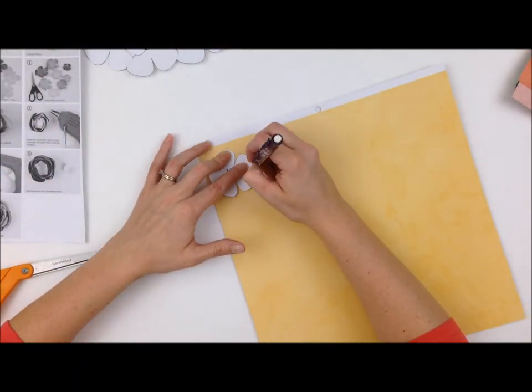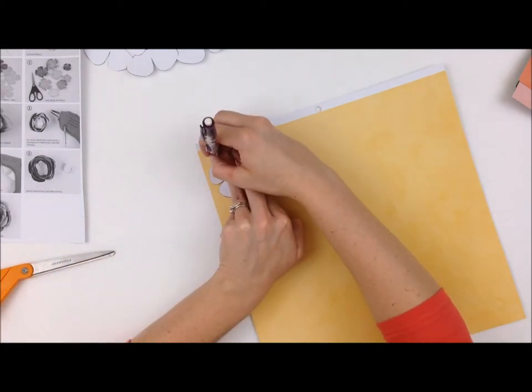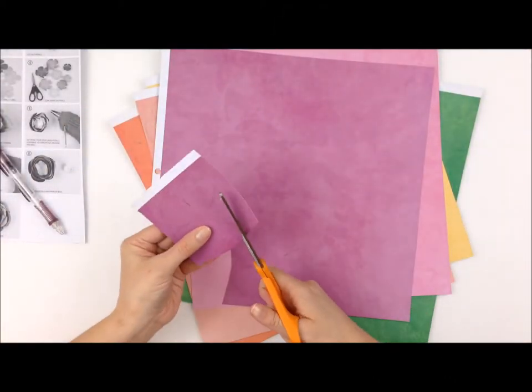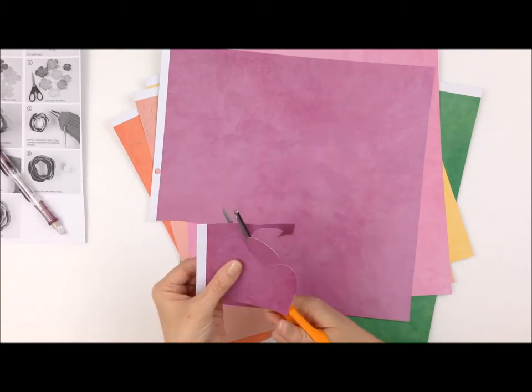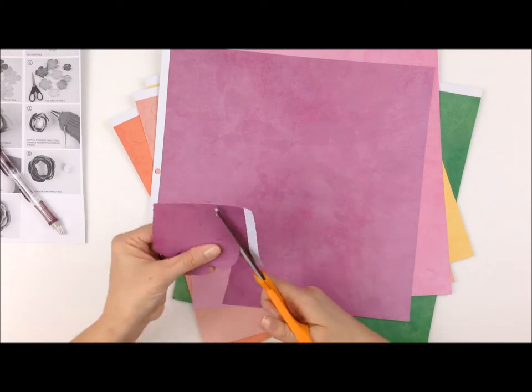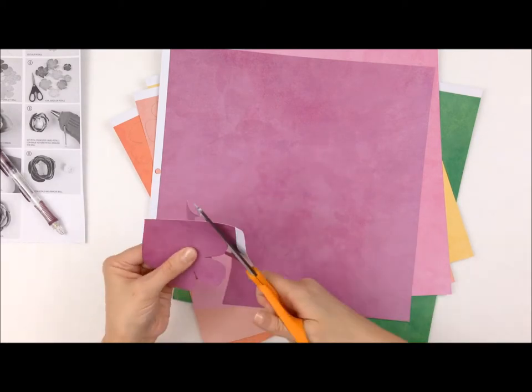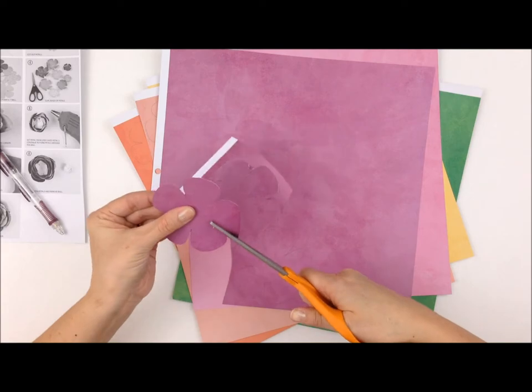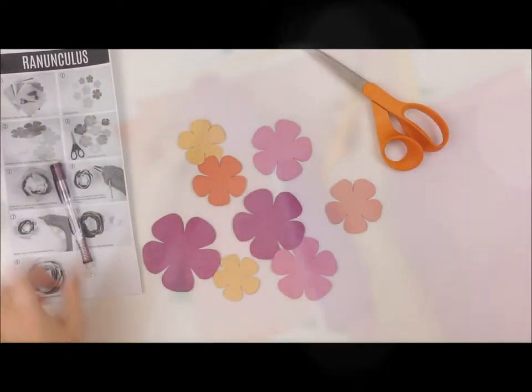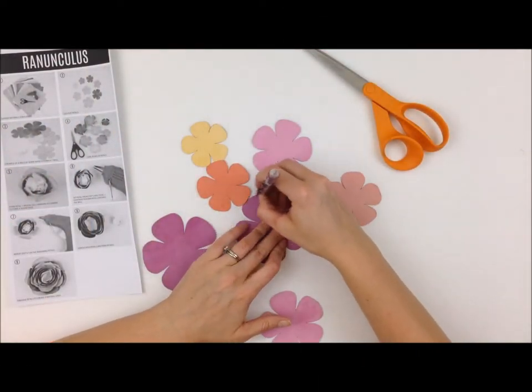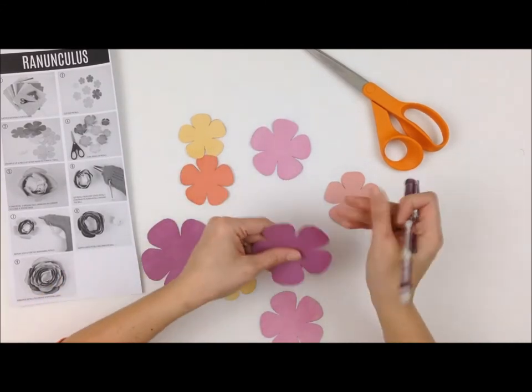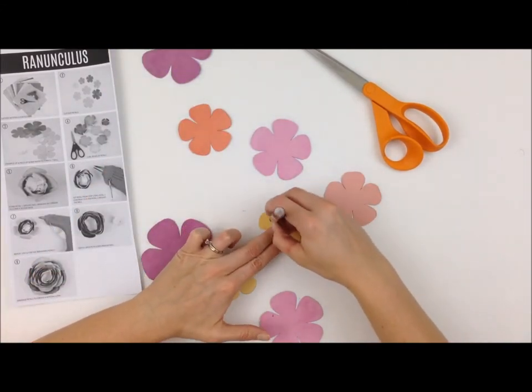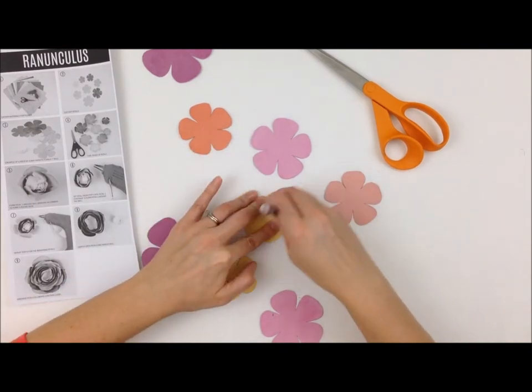So the next thing you want to do is trace with a pencil all the templates onto the pattern papers that you want to use and then of course cut them out. Now this part of the process can be a little tedious, so maybe sit back and watch your favorite TV show while you're doing it, but this is a great option if you don't have a die cut machine or you don't want to have to get it out. The next step is to erase those pencil marks. I would be really bothered if I noticed these later on the final product so I made sure to take care of all of my pencil lines.